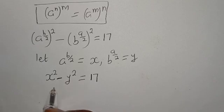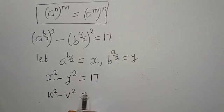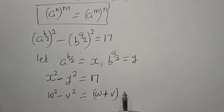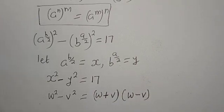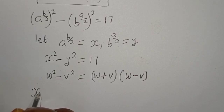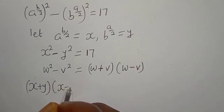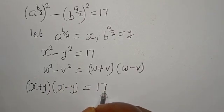This is a difference of squares. If you have W squared minus V squared, this equals W plus V multiplied by W minus V. So our equation becomes X plus Y multiplied by X minus Y is equal to 17.